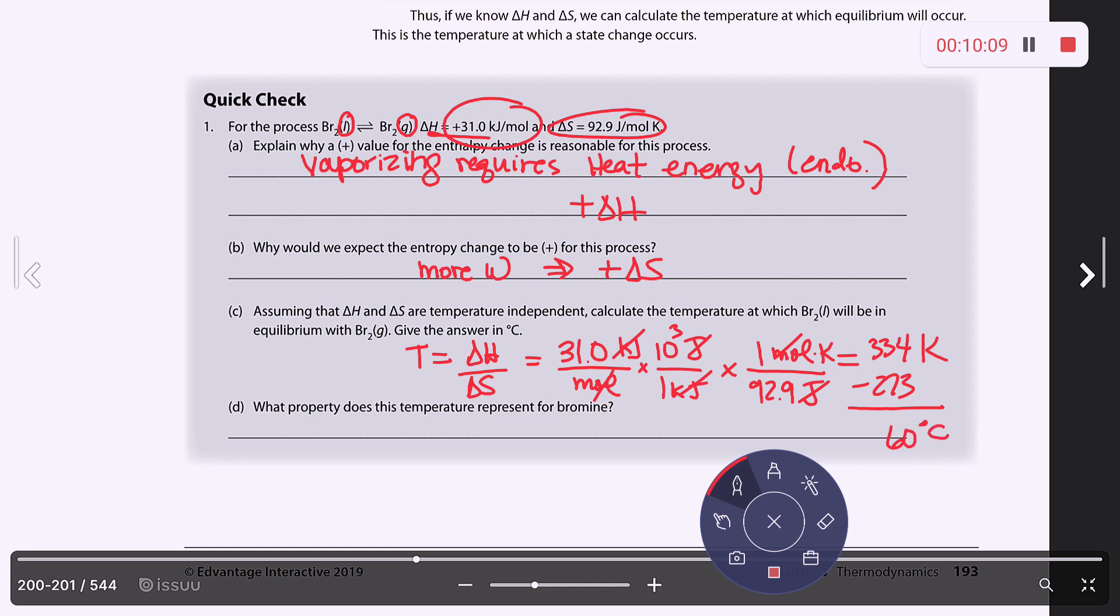And what property does this temperature represent for bromine? Well, if we're showing where liquid bromine is in equilibrium with gaseous bromine, this is actually going to be the boiling point for that liquid.